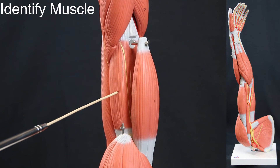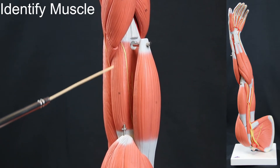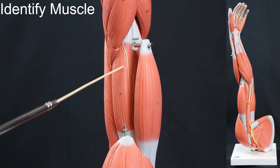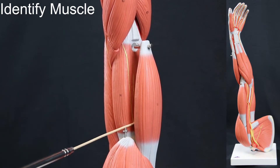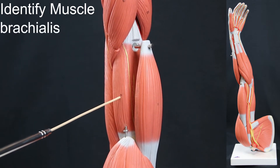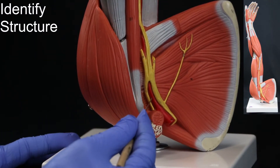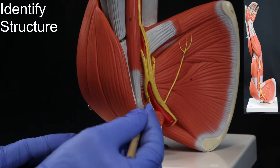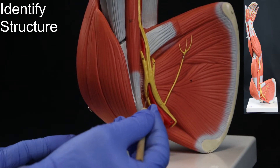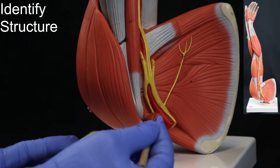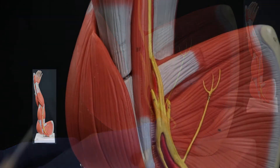I.D. specific head of muscle: short head of the biceps brachii. I.D. muscle: brachialis. I.D. structure: subclavian artery.